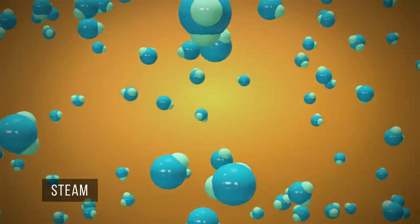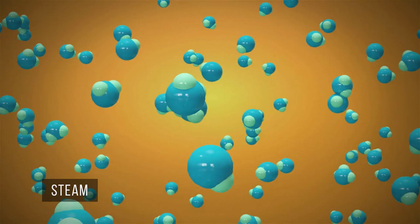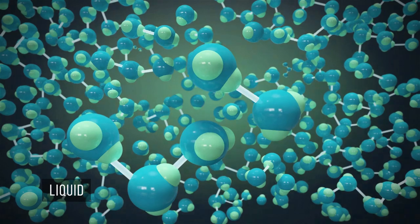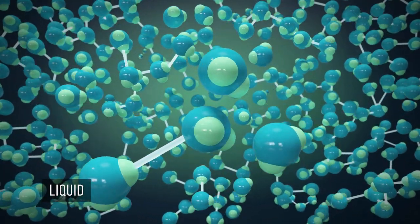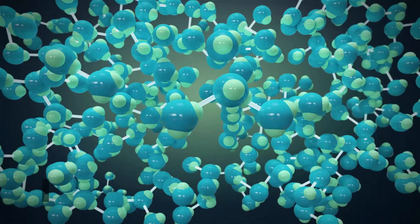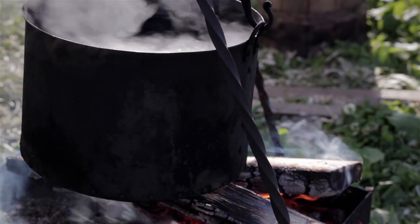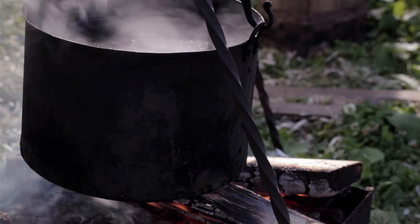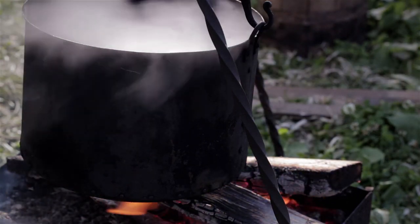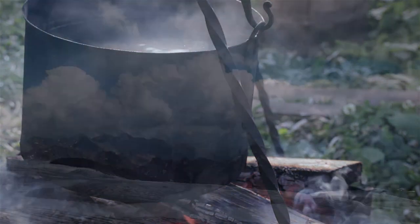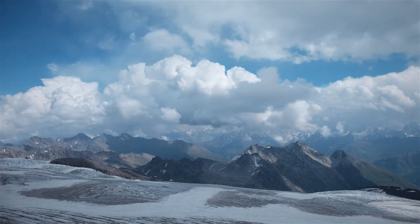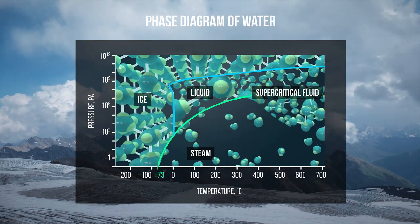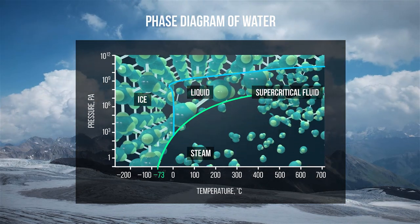In order for a phase transition to occur, it is necessary to change the temperature of a substance, its internal energy. But under these transformations, water molecules themselves do not change. From the school course of physics, you know that the boiling point of water, that is the temperature of the phase transition, depends on pressure. For example, the water in a pot on the mountain top will boil at a temperature lower than 100 degrees Celsius. The dependence of the state of matter on pressure and temperature is usually illustrated by graphs called phase diagrams.